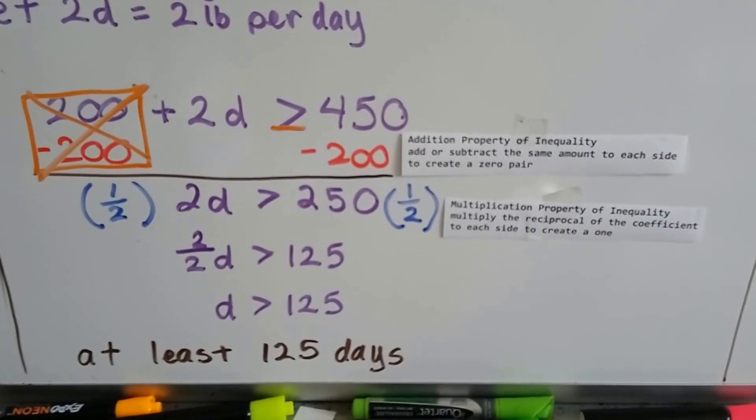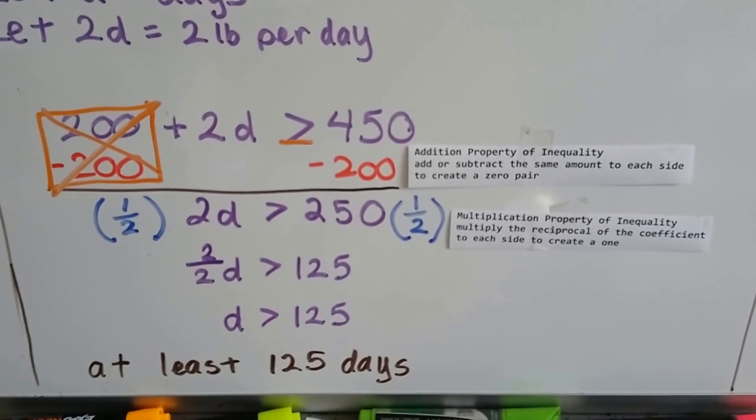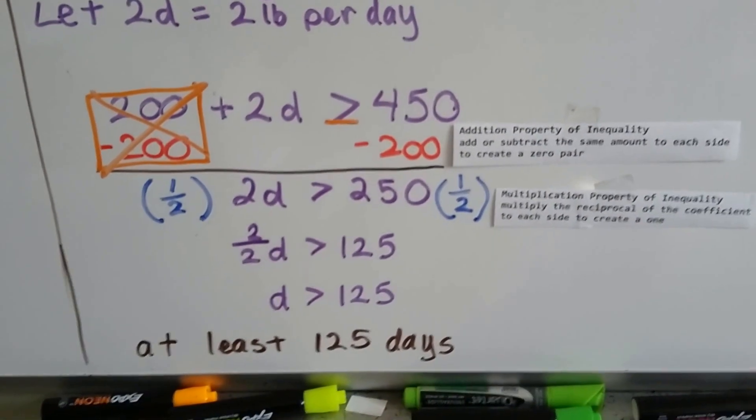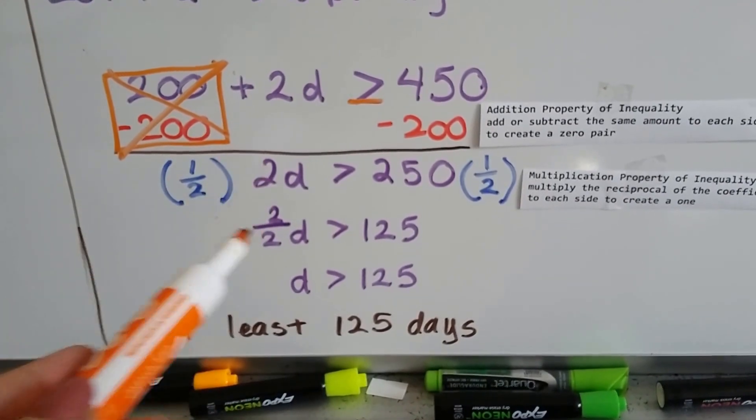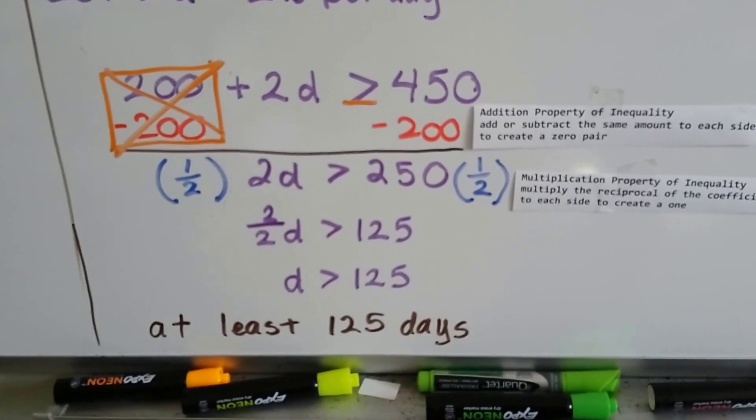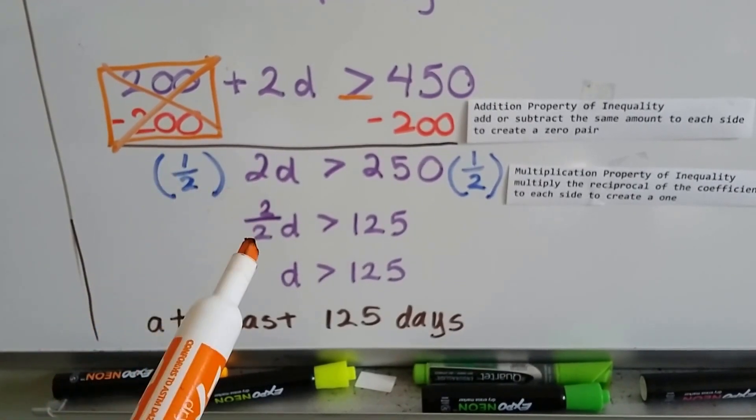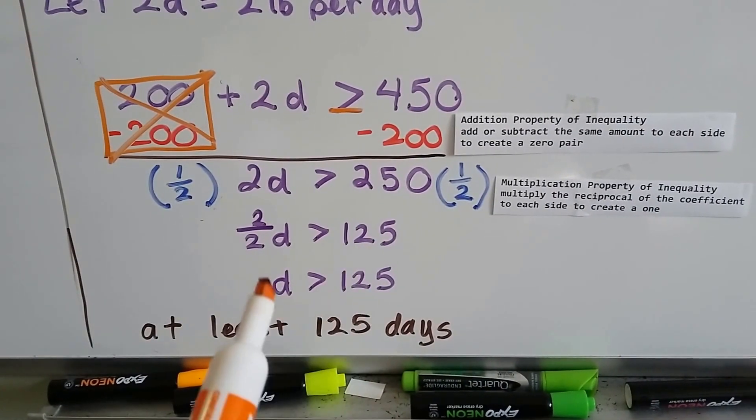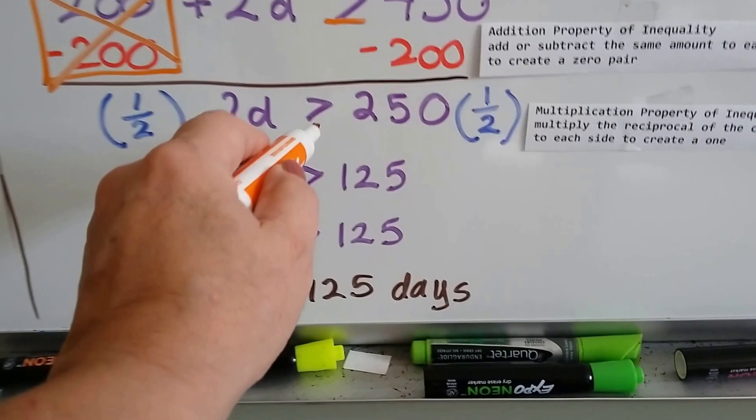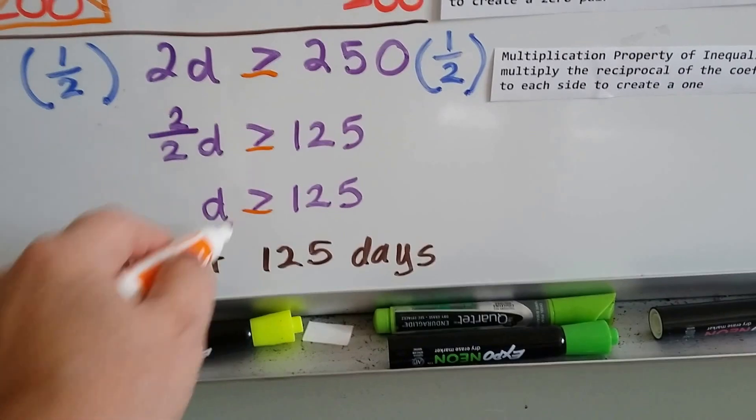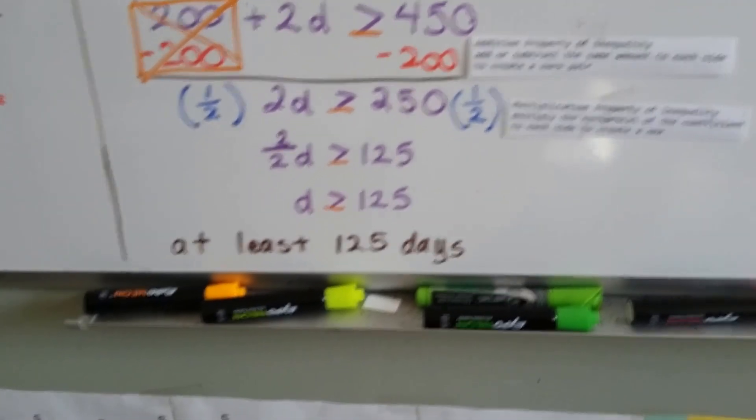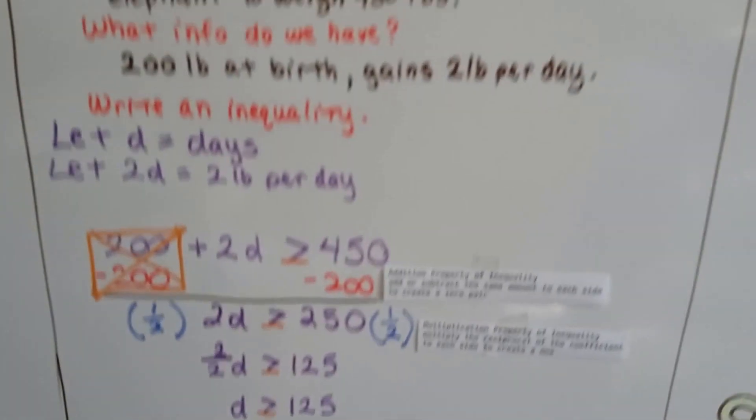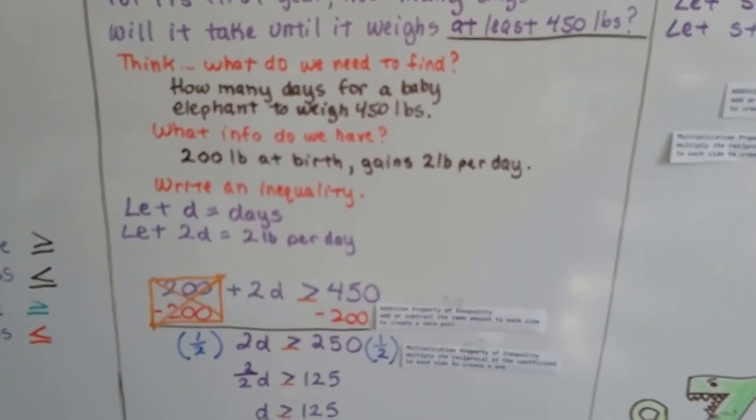Now we can use the multiplication property of inequality to multiply the reciprocal, the upside down version, of the coefficient to each side to create a 1 in front of the variable. 2 can be 2 over 1, so upside down, its reciprocal is 1 half. We multiply each side by 1 half, and we get 2 over 2d on this side, and we get 250 over 2 on this side. 250 divided by 2 is 125, so d is greater than 125, or equal to, because it said it has to be at least that, so it could be that, or more. So now we know that it's going to take at least 125 days or more for the baby elephant to weigh 450 pounds.